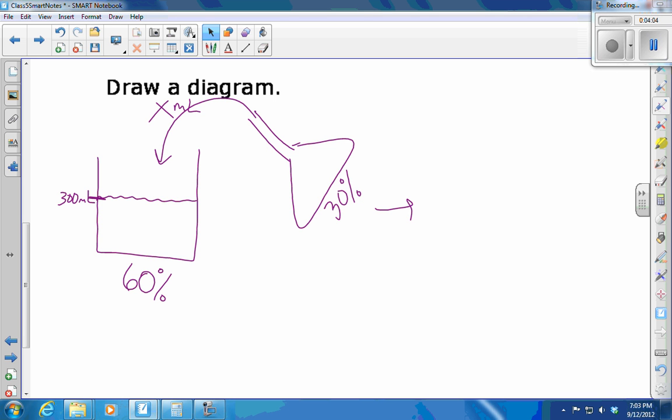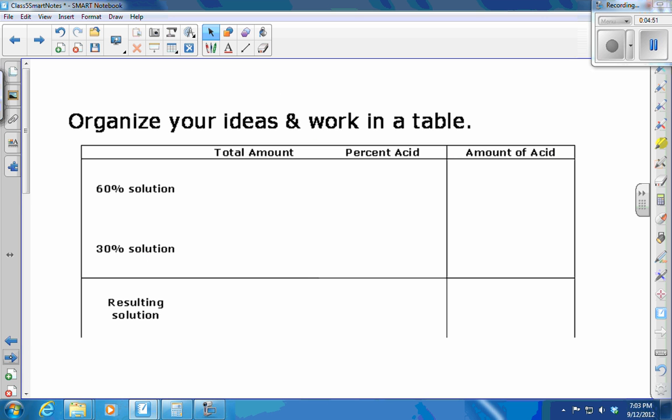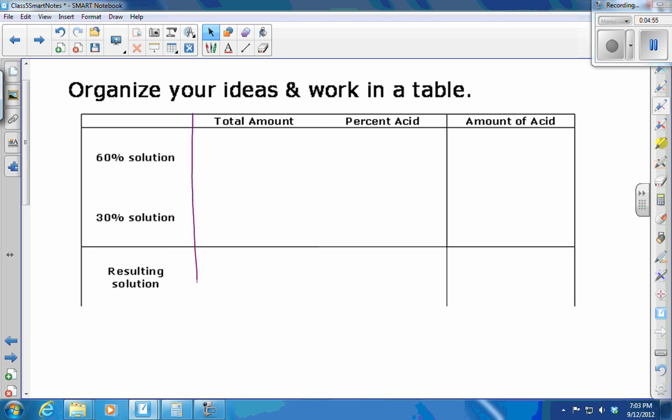After I do the pour, I'm going to have more solution. This is going to rise. It's not going to be at 300 anymore, but it's going to be 50% acid. And how much is going to be in here? 300 plus x. You got it. 300 plus however much I pour in, which I called x. From the diagram, we're going to try to pull out relevant pieces of information to fill in this table that's going to help us organize our ideas and our work. This is that common model. There are percentages given, so we're going to use the model whole times percent equals part.